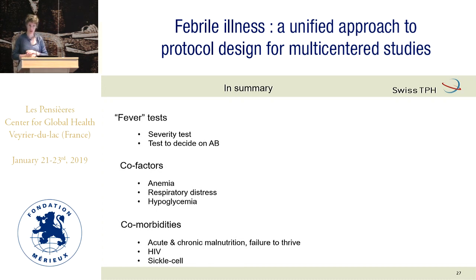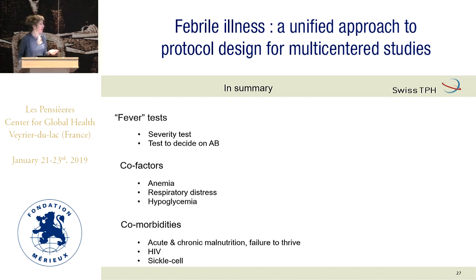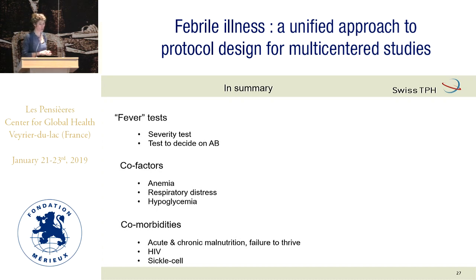To summarize: I want to emphasize that basic tests for overall patient management are the most important — much more important than pathogen-specific tests. Number one would be the severity test that we desperately need, and a test to decide on antibiotics. But this will take a long time. In the meantime, we have things to look at: anemia, respiratory distress, hypoglycemia, and comorbidities — especially malnutrition, failure to thrive, HIV, and sickle cell.